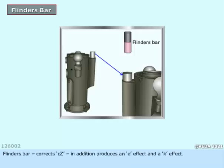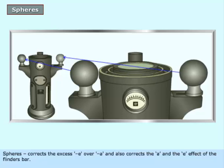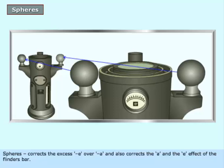Flinders bar corrects CZ. In addition, it produces an E effect and a K effect. Spheres correct the excess negative E over negative A, and also correct the A and the E effect of the Flinders bar.